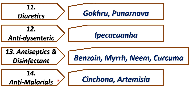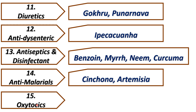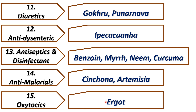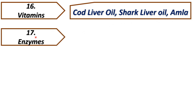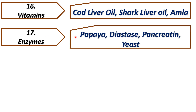Fourteenth is anti-malarials. In the old syllabus there was only one drug; now a new drug, Artemisia, has been added. Then the sixteenth chapter covers ergot. The seventeenth subcategory is vitamins, mainly obtained from cod liver oil, shark liver oil, and amla — amla contains vitamin C. Seventeenth subcategory is enzymes, covering papaya, diastase, pancreatin, and yeast.